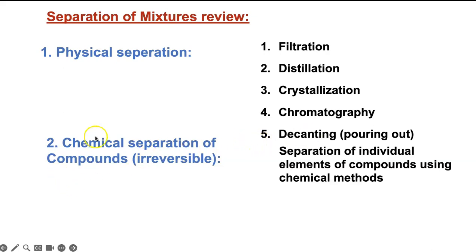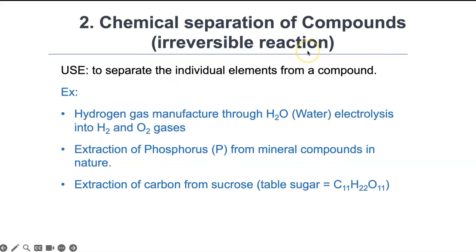The second major topic is chemical separation of compounds. This is an irreversible reaction. When you make compounds from a bunch of elements, you're combining them in chemical bonds into one substance, a compound. This is the reverse—you're breaking them down back into the elements.